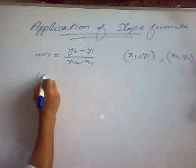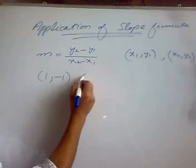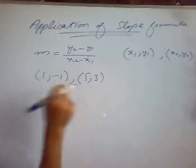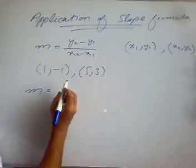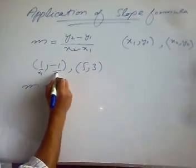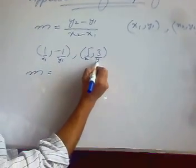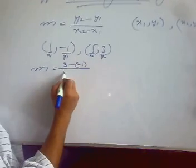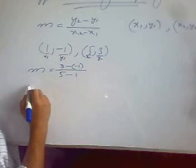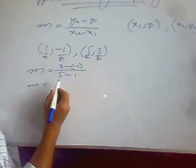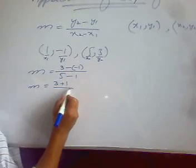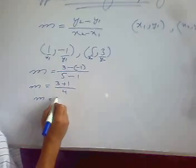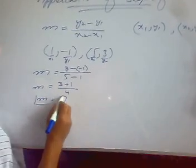Suppose we have two points (1, -1) and (5, 3), and we want to calculate their inclination as well as their slope. The slope m equals y2 minus y1 over x2 minus x1. Here x1=1, y1=-1, x2=5, y2=3. So m = (3 minus minus 1) over (5 minus 1) = (3 + 1) / 4 = 4/4 = 1. Our slope is 1.